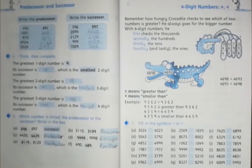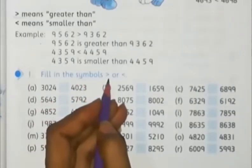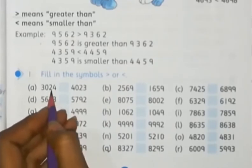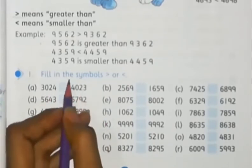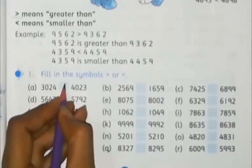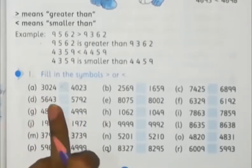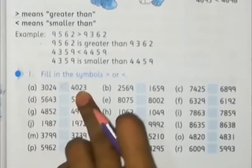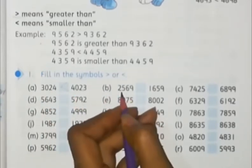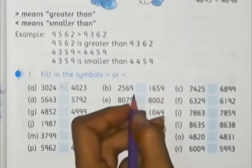So look at page number 35 where we have to fill the boxes with the correct symbol — fill in the symbols with greater than or smaller than. Three thousand twenty four, four thousand twenty three. Here we have two thousand five hundred sixty nine and one thousand six hundred and fifty nine.